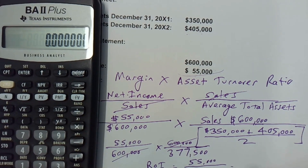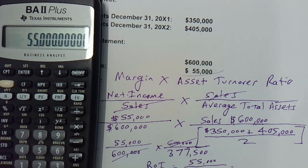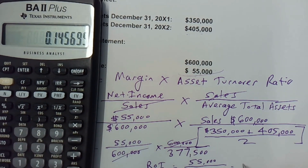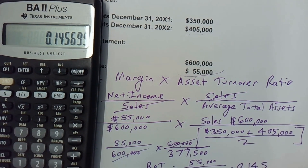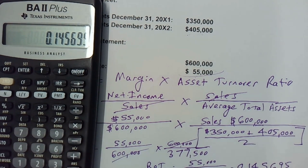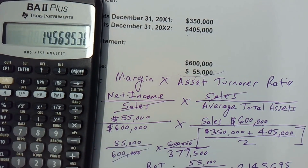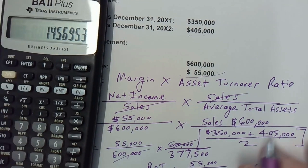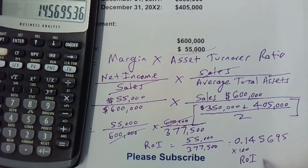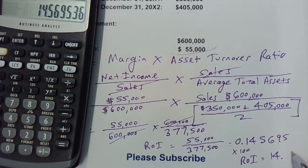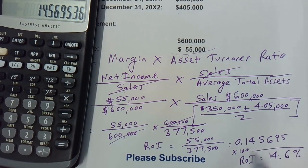Using the calculator: $55,000 divided by $377,500 gives us 0.145695. Multiplying by 100 to convert to a percentage — or moving the decimal two places — gives us approximately 14.6%. So our ROI is 14.6%.